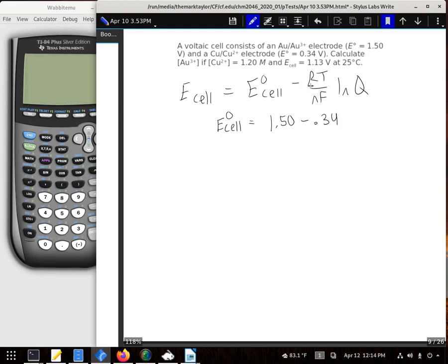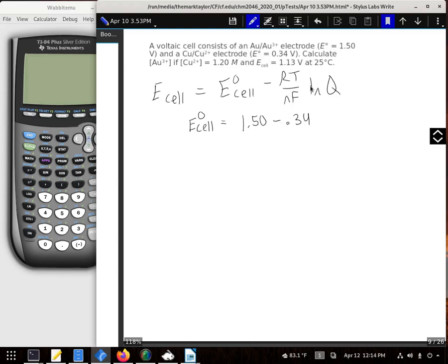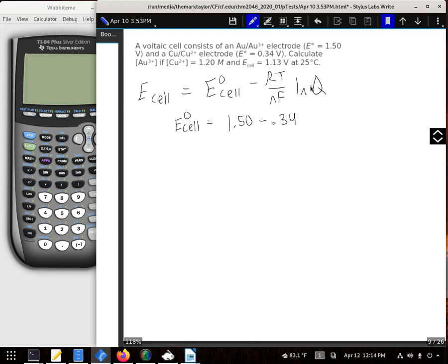By doing that, we've defined that the copper is the anode. So as the anode, I know that it's going to be a situation where copper turns into Cu2 plus and makes electrons. Therefore, the gold must take three electrons to give us the Au.